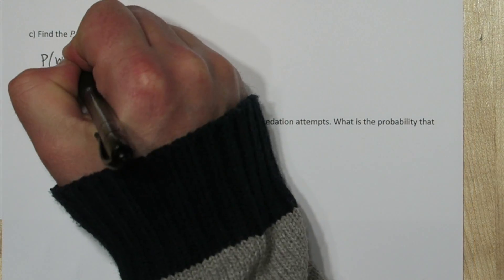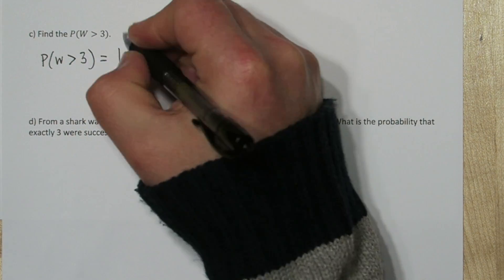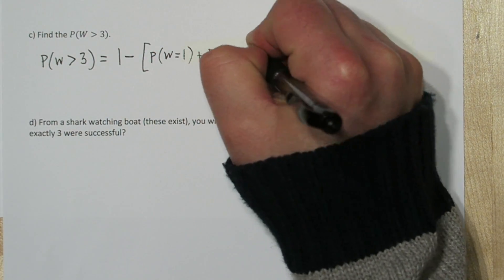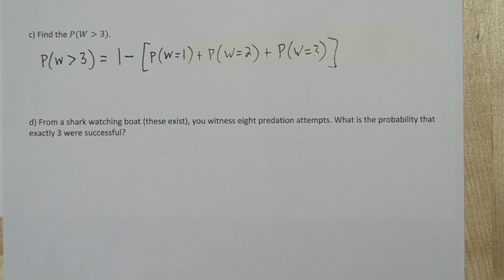We can find the probability that the first success occurs after at least three predation attempts by using the complement. As long as the first success doesn't occur on the first, second, or third trial, it means the first success occurred after the first three trials. So we can use what we used in part B three times, or we can use this other function.